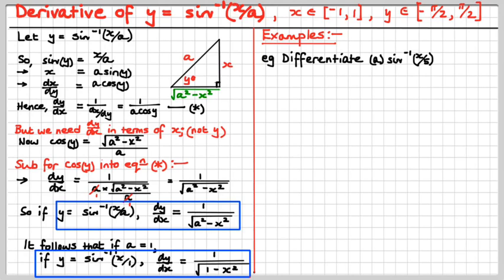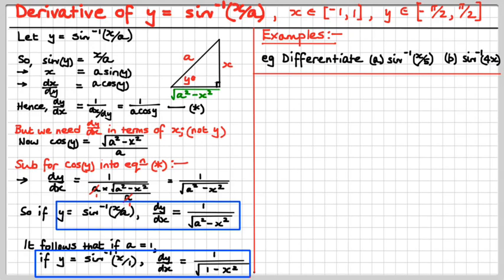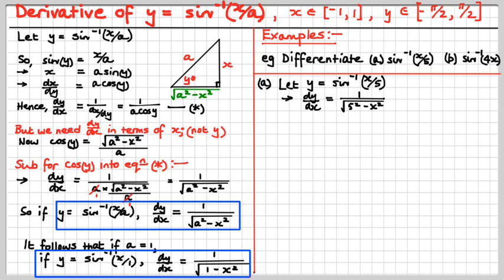Examples. Differentiate inverse sine of x over 5. That should be pretty easy because 5 is a, so we can just plug straight into the formula. Y equals the angle whose sine is x over 5. Therefore, plugging straight into the formula, dy/dx is 1 over the square root of 25 minus x squared. And that's our answer.